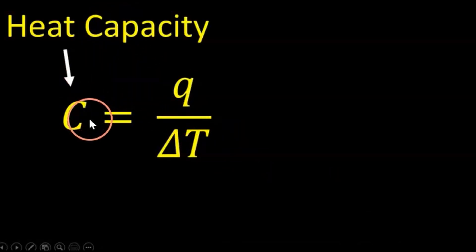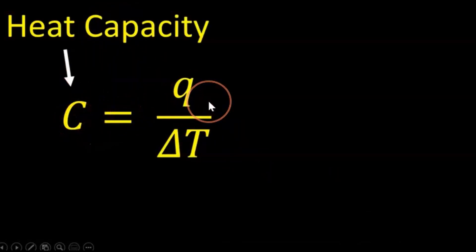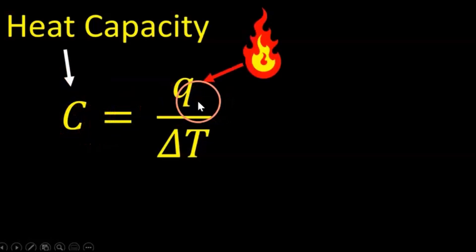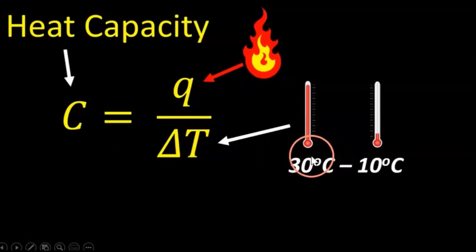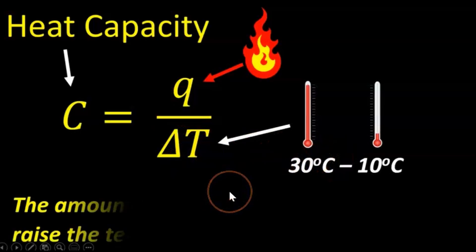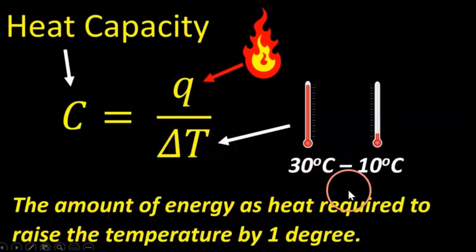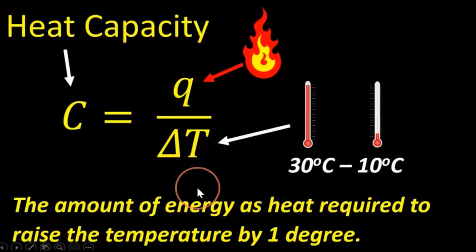Heat capacity is defined as the energy transferred as heat divided by the change in temperature. In words, it's the amount of energy as heat required to raise the temperature by one degree. We can do that using two main processes.